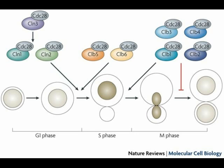Growth factors are external signals received at the plasma membrane. Even cells that are arrested in G0 will finish the cell cycle if stimulated to do so by growth factors. For example, when blood platelets release a growth factor, skin fibroblasts in the vicinity are stimulated to finish the cell cycle, thereby repairing an injury.